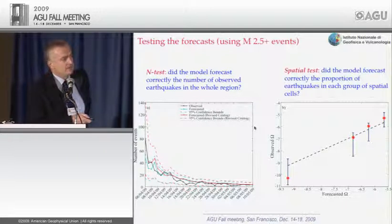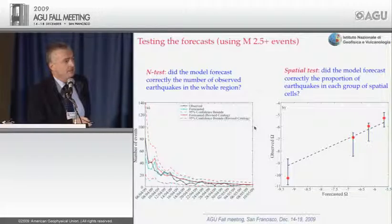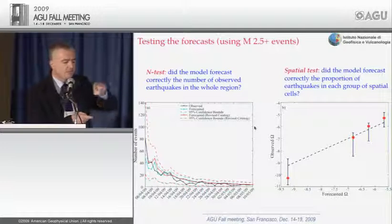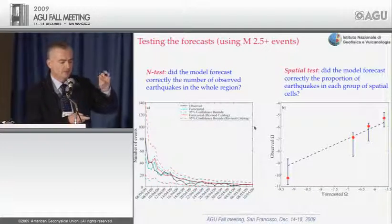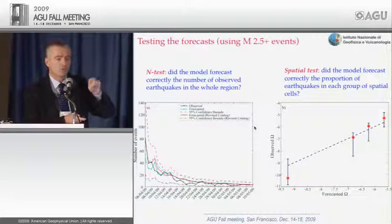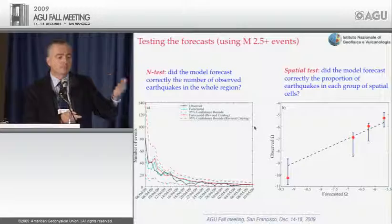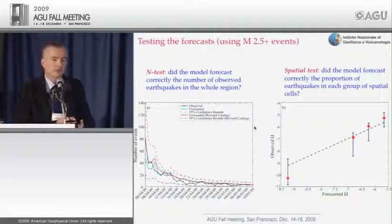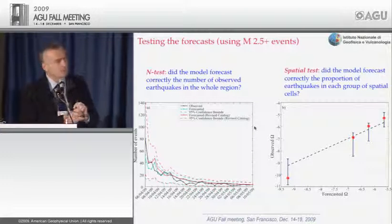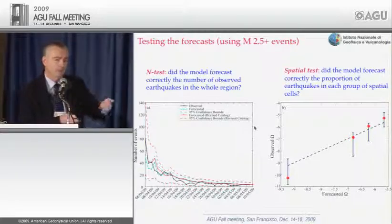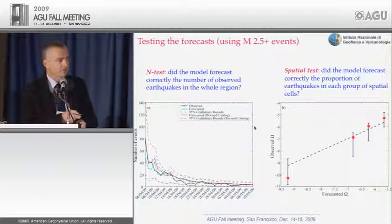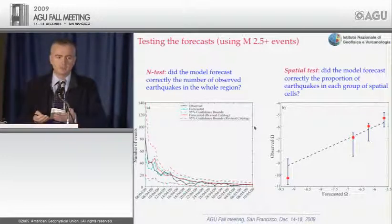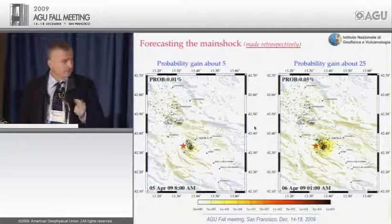This plot shows that earthquakes occurred exactly where our model expected. We also ran the same code retrospectively to see how it would have forecasted the main shock. The forecast that could have been released on April 5 at 8 a.m. — just a few hours before the main shock — showed an increase in probability in the main shock area: probability gain of 5 for the whole area, 25 for a specific zone, and potentially two orders of magnitude in the foreshock area.